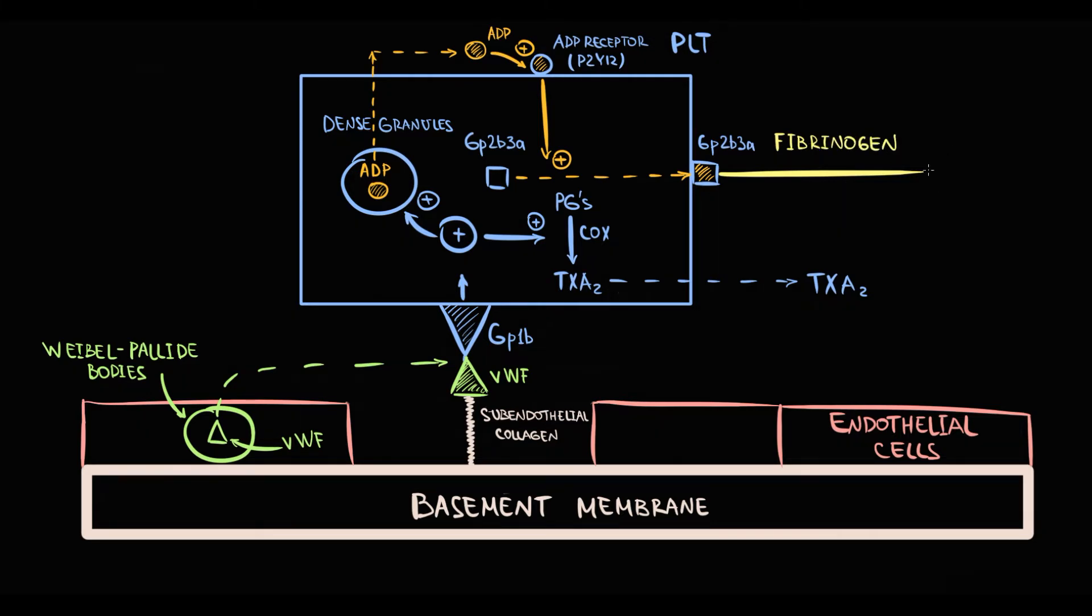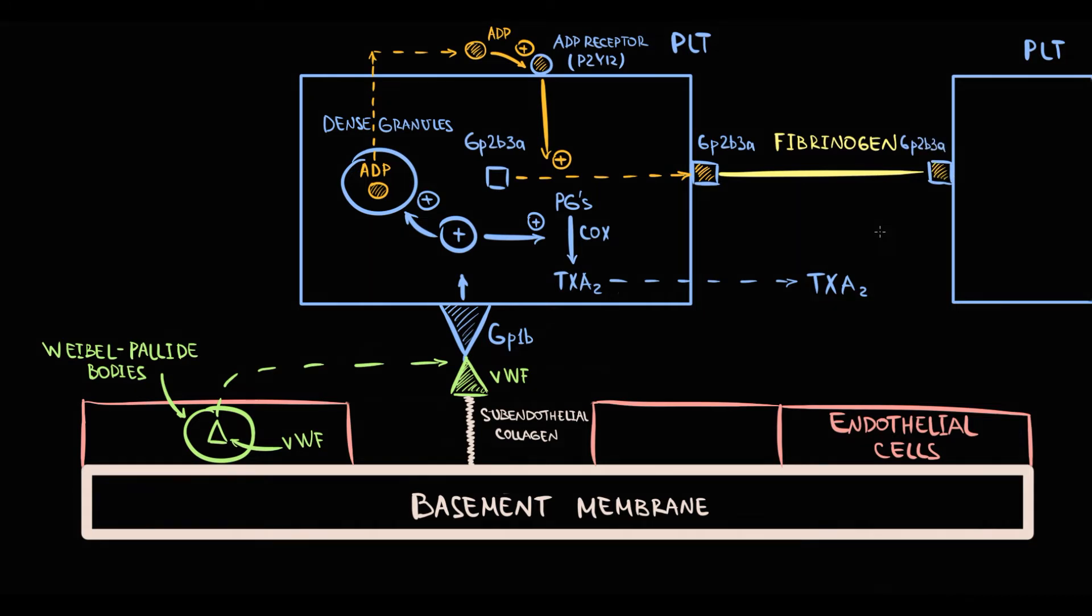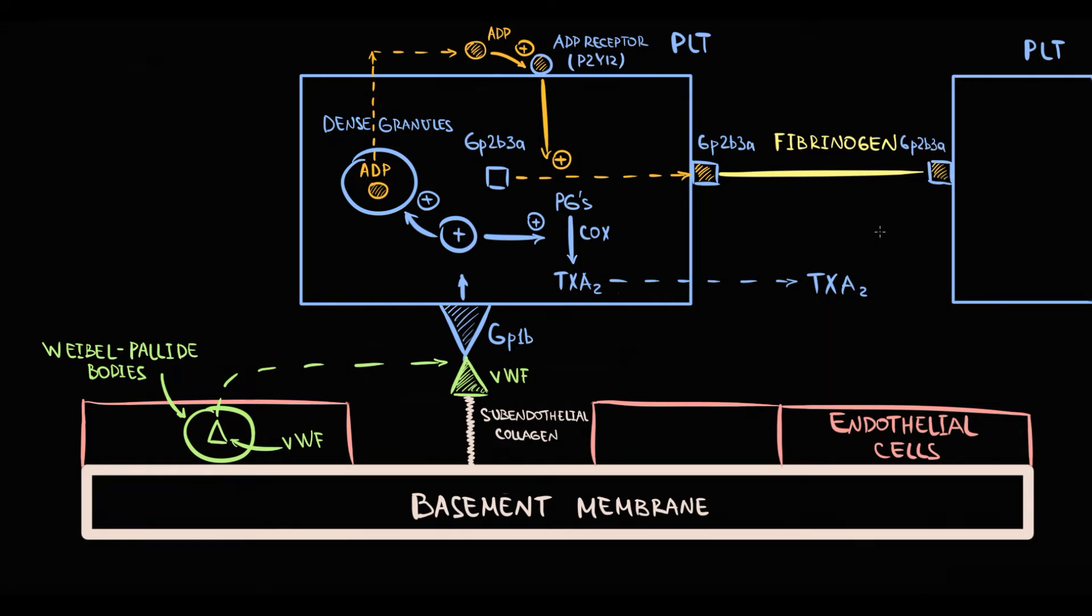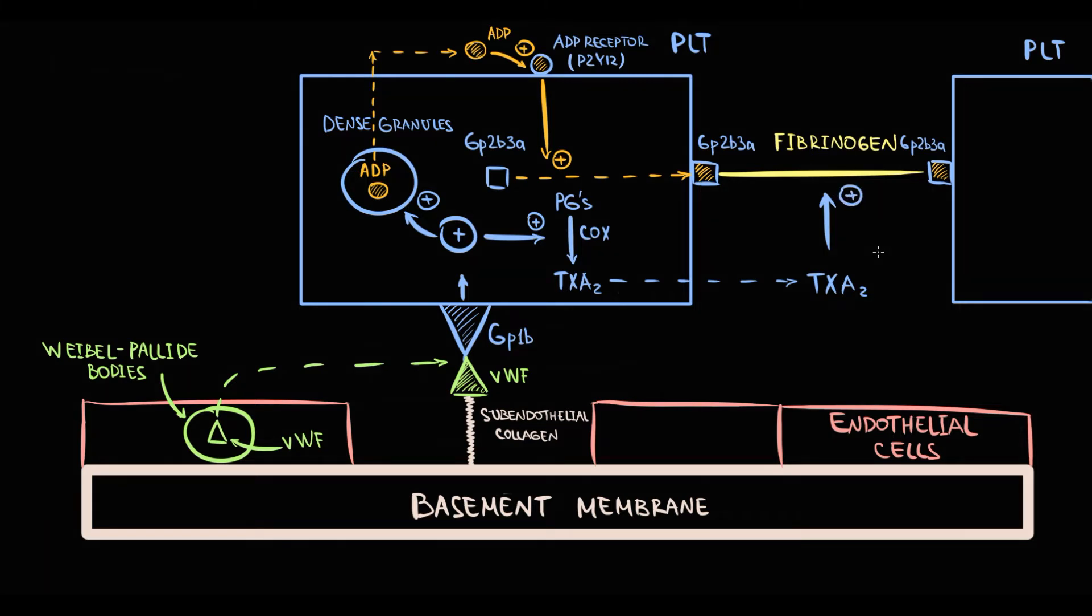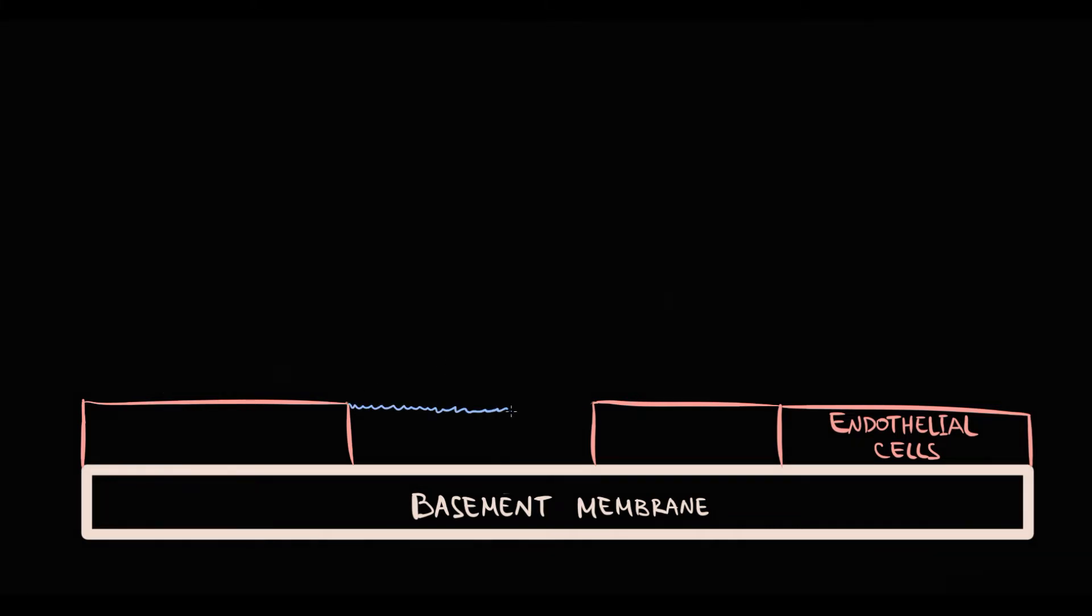When fibrinogen notice a GP2b3a receptor on platelet surface, fibrinogen immediately binds to GP2b3a, and when another platelet come to the site of injury, platelet immediately binds by GP2b3a to fibrinogen. And this process is significantly accelerated by thromboxane A2. This binding occurs over and over again, until platelet plaque will be formed. And exactly this gathering of platelets at the site of injury, called aggregation. And aggregation results in formation of a platelet plaque.